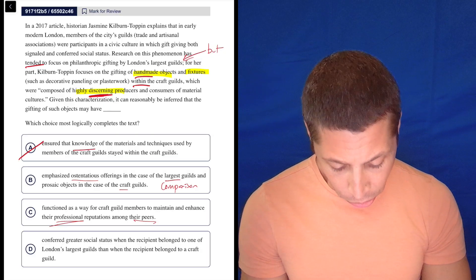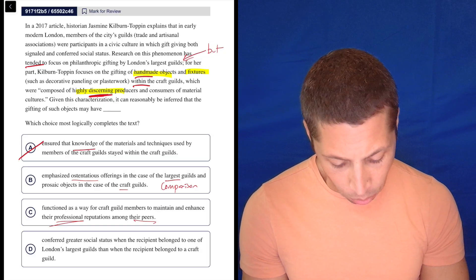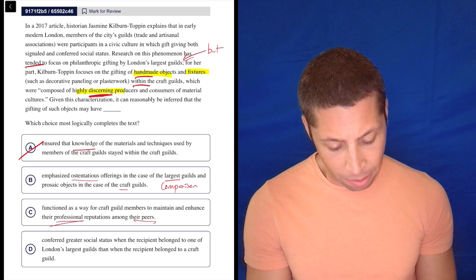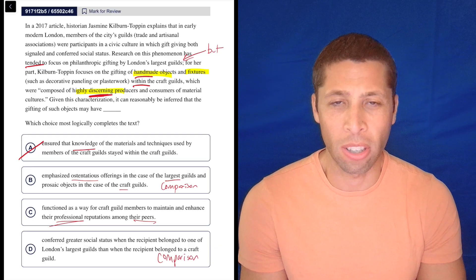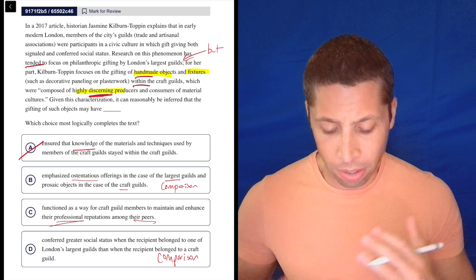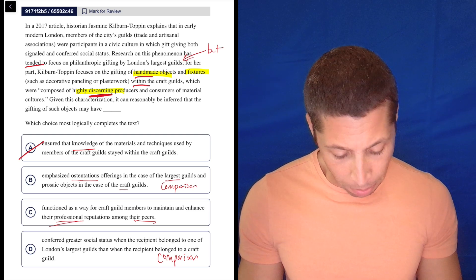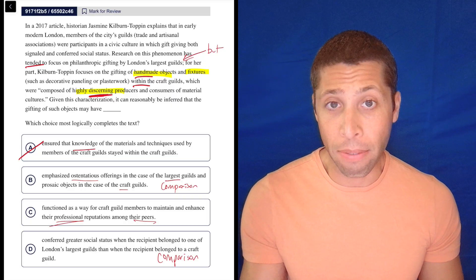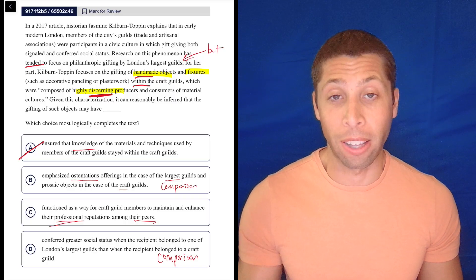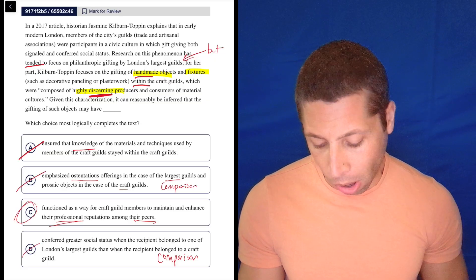D, it conferred greater social status when the recipient belonged to one of London's largest guilds than when the recipient belonged to a craft guild. Again, this is comparing those things. This is making me even more sure that that's a bad comparison. This just doesn't matter. They're not comparing the different types of guilds. They're maybe comparing the different types of gifts. But I don't even think that. Really, they're just making a point that these people gave really good gifts, that they're very well crafted. So this doesn't make any sense. I'm good with B being wrong.